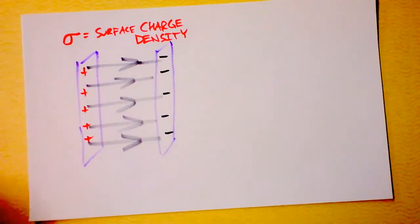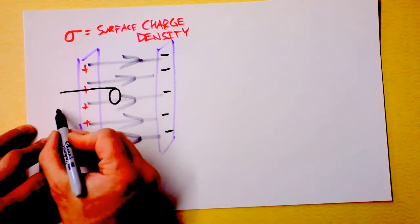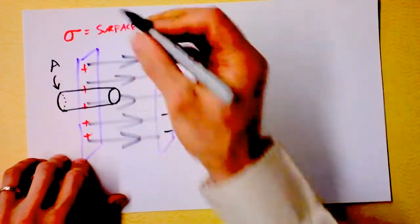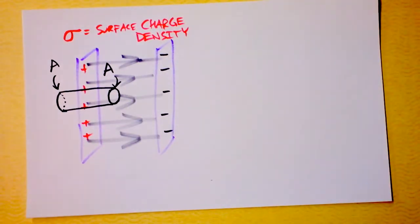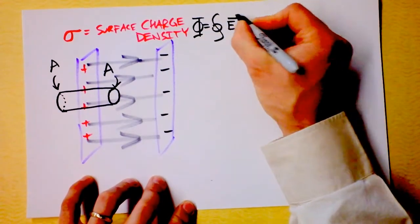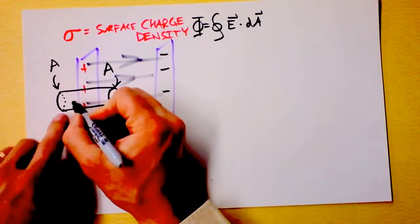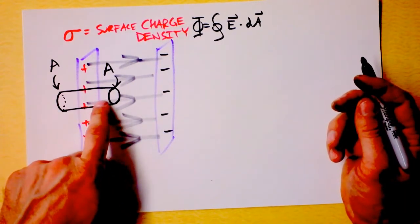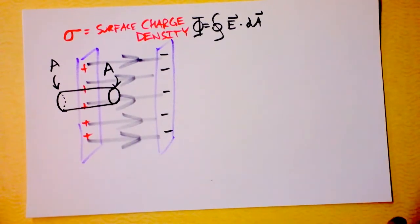My plan is to take a Gaussian surface that looks like a cylinder going around this plate. Remember, Gaussian surfaces aren't real — they're a construct of the mind. I'll give it an area A on the bottom and area A on the top. The electric field outside the parallel plates is zero — the field is entirely within the two plates — so there's no electric field leaving through the sides of the cylinder. Therefore there is no flux through the sides.